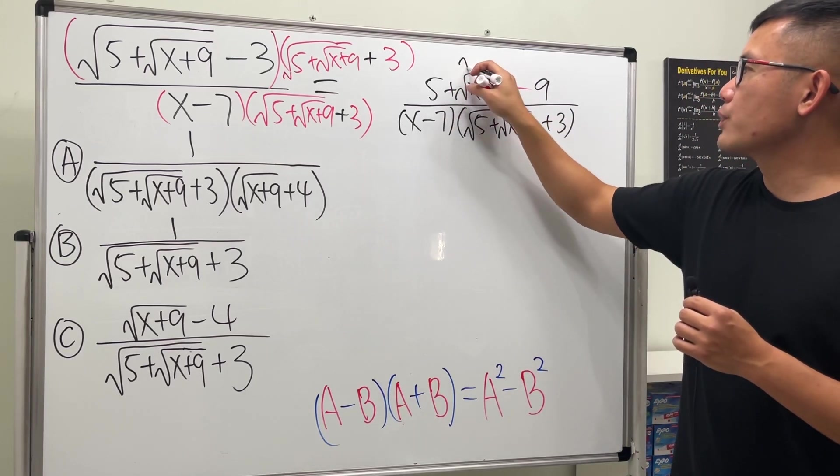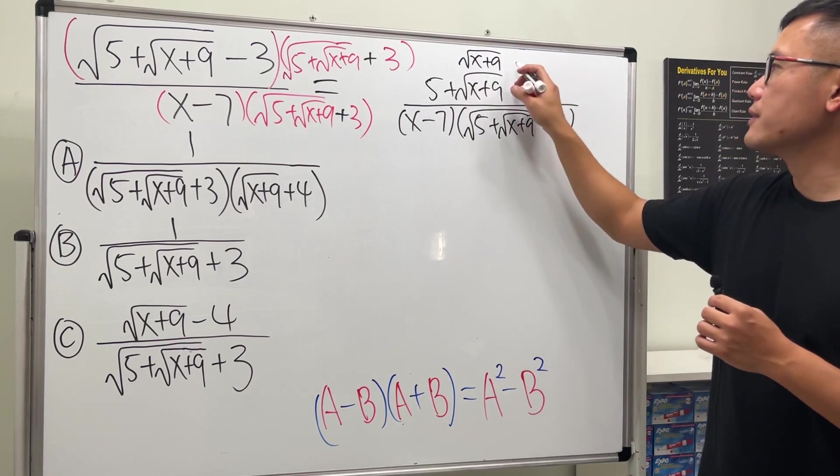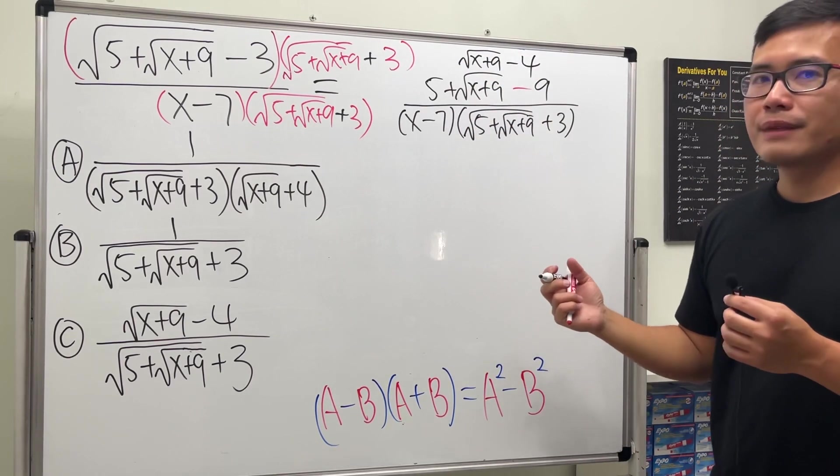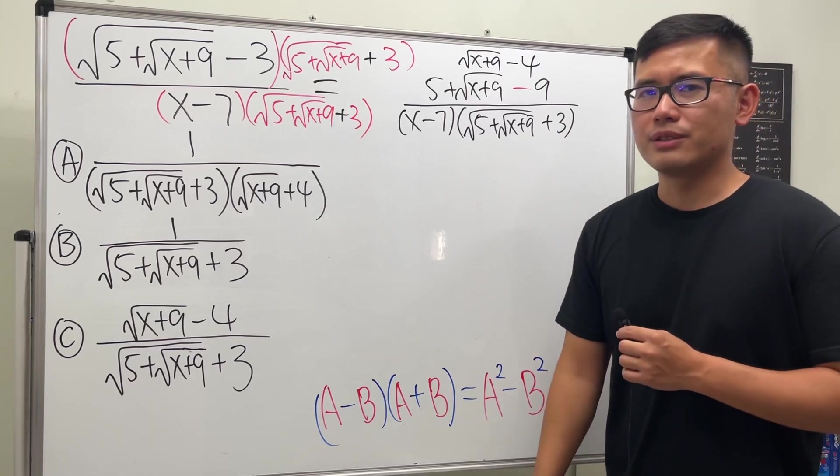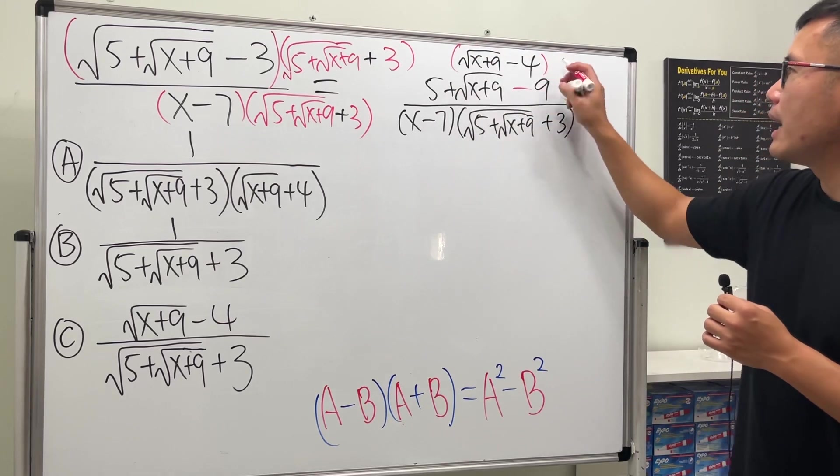Okay, we have a square root expression again. So why don't we try to use the conjugate one more time? Right here, let's go ahead and multiply the top by √(x+9), and this right here turns into a plus, and then 4.